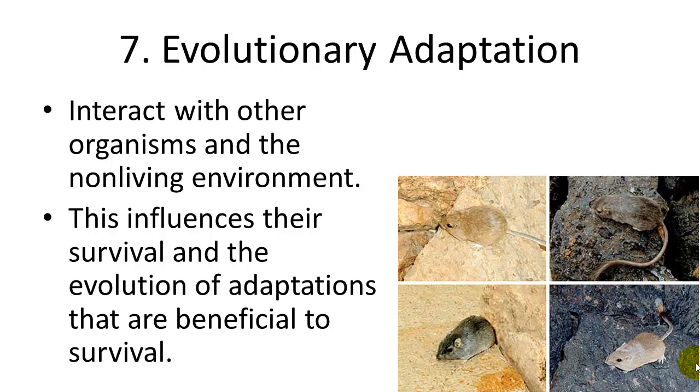The seventh characteristic that all living things have is evolutionary adaptation. All living things interact with other organisms in their environment and with the non-living components of their environment. This interaction influences their survival. If they have adaptations that are beneficial to their survival, then they can pass those adaptations down to their offspring. But if they have adaptations that are not beneficial, then they are less likely to pass those down to their offspring.